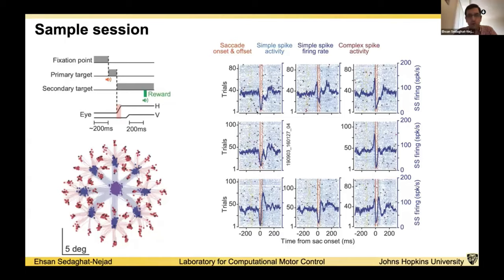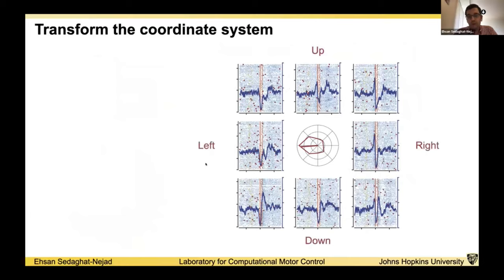However, since we also sorted the complex spikes, if you look at the complex spike activity, what we'll see is first of all they are sparse. But if you look at the probability of getting a complex spike after the target jump and before the saccade onset, the complex spike activity shows tuning and a preference for a direction.